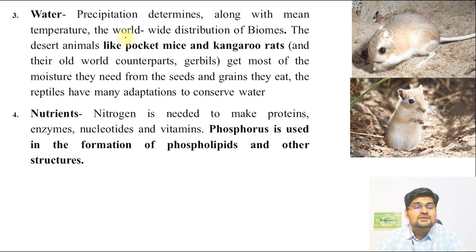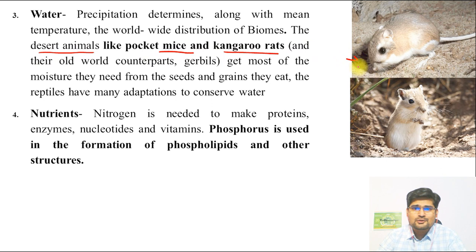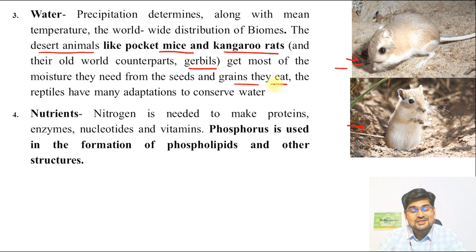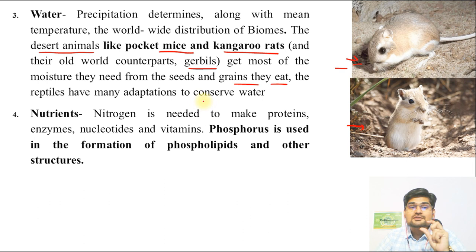Water and nutrients are also key abiotic factors. Precipitation or water content determines so much in terms of worldwide distribution of biomes. For example, desert animals like pocket mice and kangaroo rats get most of their moisture from seeds and grains they eat, conserving moisture and adapting to low-moisture conditions. The camel is another well-known example. Water is one of the most vital components for determining plant and animal distribution.